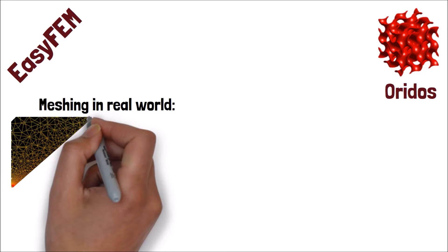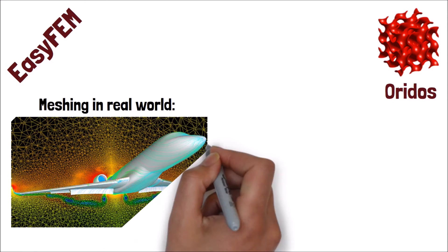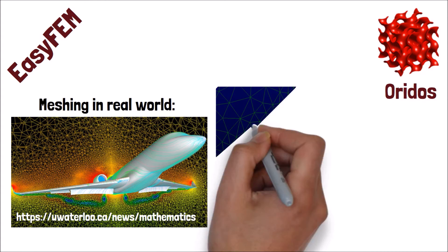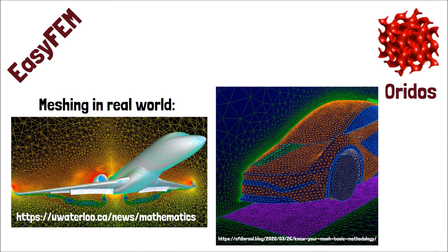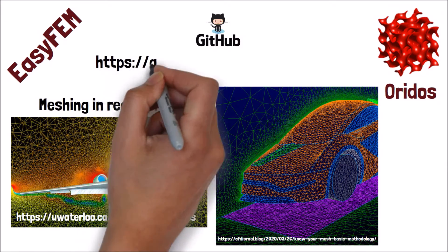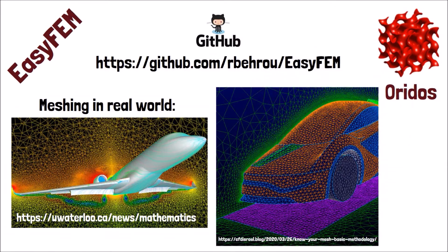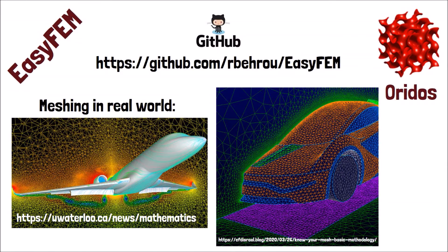These are examples of meshing for real-world applications. You can see how complex geometries we can have for real-world problems. The implementation source files are in my GitHub repository called EasyFEM, and here is the address. Okay, let's get started.